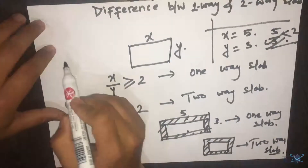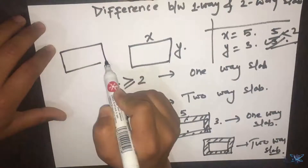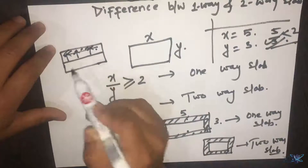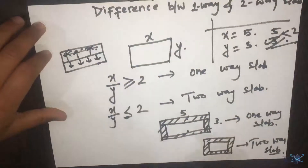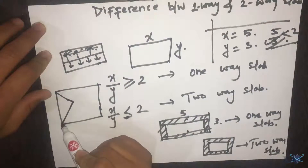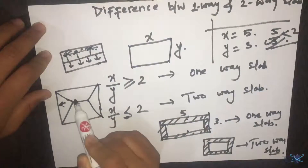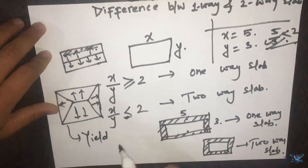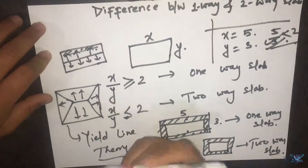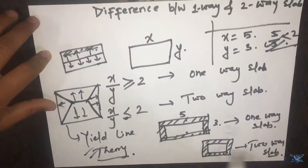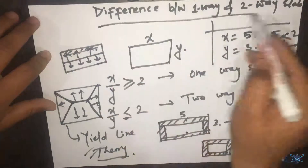The next difference is the load transfer. In a one-way slab, the load transfer takes place such that half of the load goes into one portion and half goes into the other portion. But in a two-way slab, the load transfer takes place differently — as you may have studied in yield line theory. It states that whenever there is a crack or failure of a two-way slab, the crack line generates in a specific manner. So these are the differences between one-way and the two-way slab.